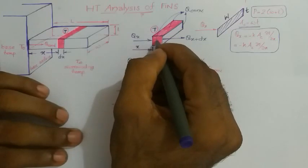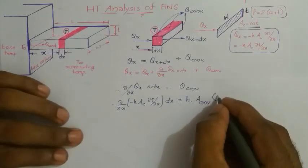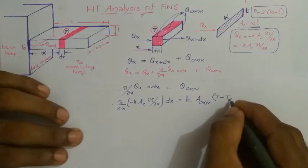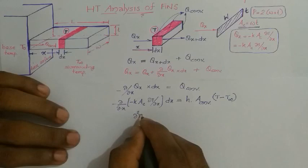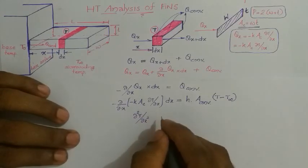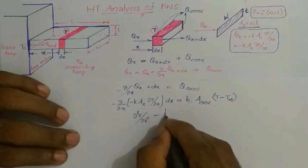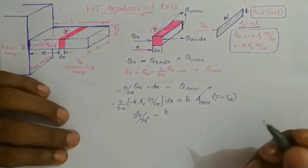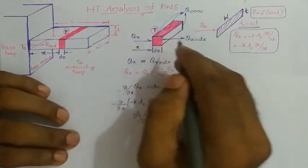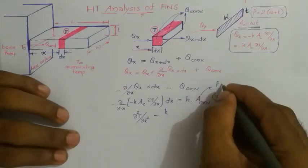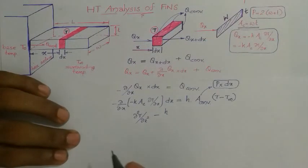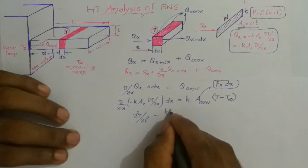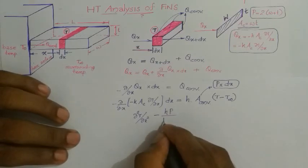Delta T here means the arbitrary temperature at any location within the fin minus the temperature of the surroundings, that is T minus T-infinity. After simplification and assuming isotropic material conditions, we get: the second partial derivative of T with respect to x squared, minus h times the convection area divided by the fin parameters. The convection area for the element equals the perimeter P times dx, giving us the simplified governing equation.